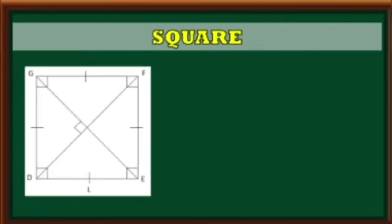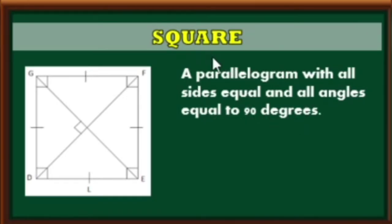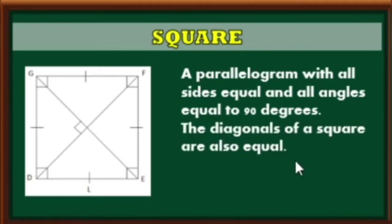Now let us move on to square. It is a parallelogram with all sides equal and all angles equal to 90 degrees. Recall that a rhombus is a parallelogram with all sides equal, and a rectangle is a parallelogram with all angles equal to 90 degrees. Therefore, a square is a special parallelogram that is a combination of a rhombus and a rectangle. The diagonals of a square are also equal, due to the rectangle property that diagonals are equal.